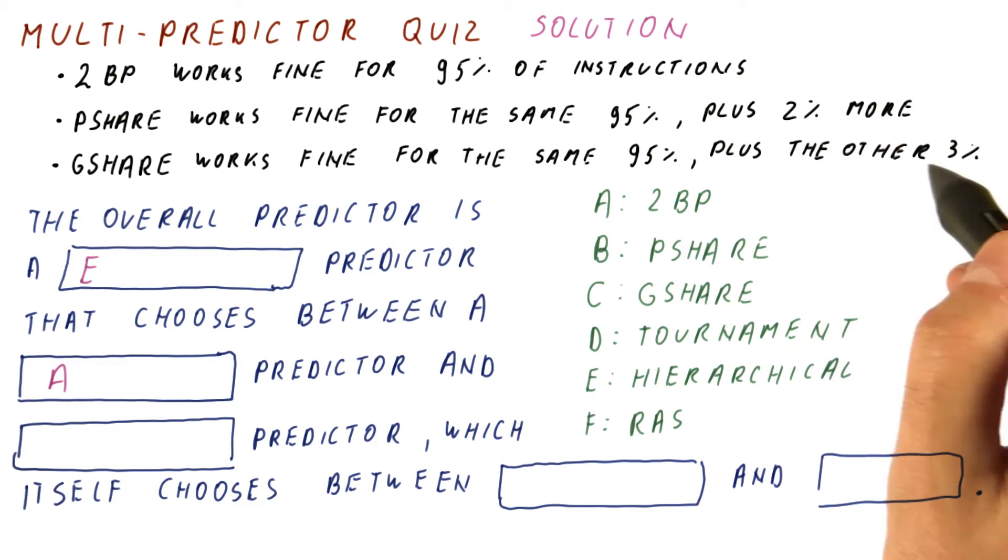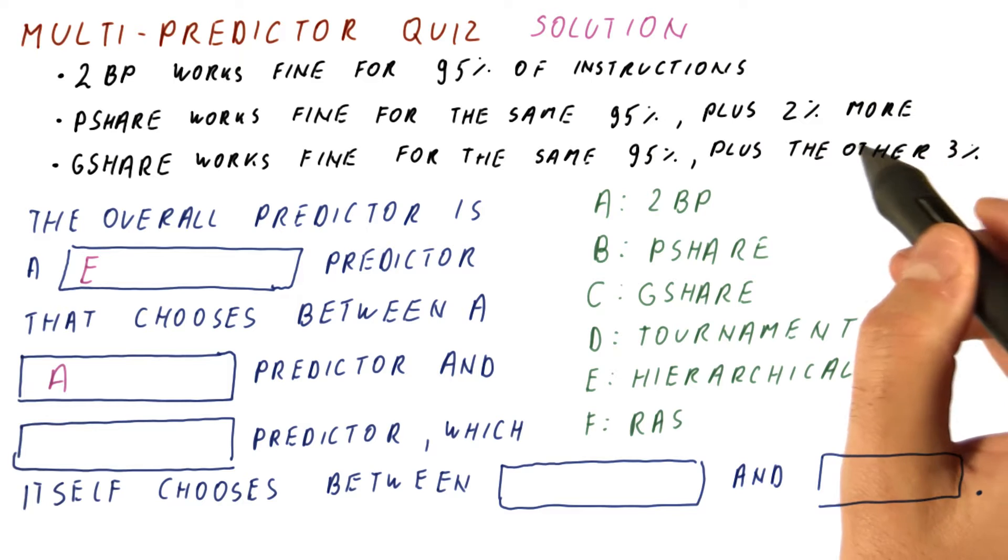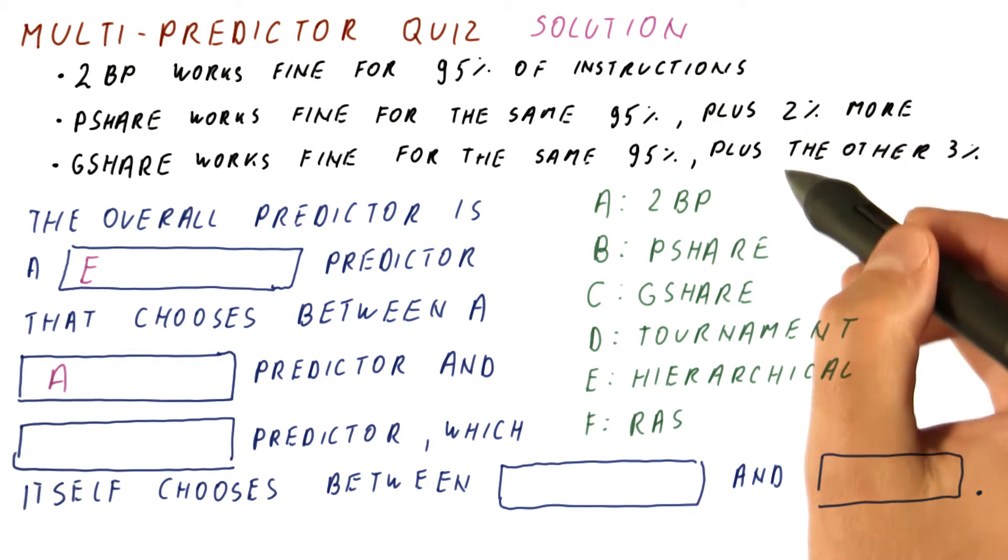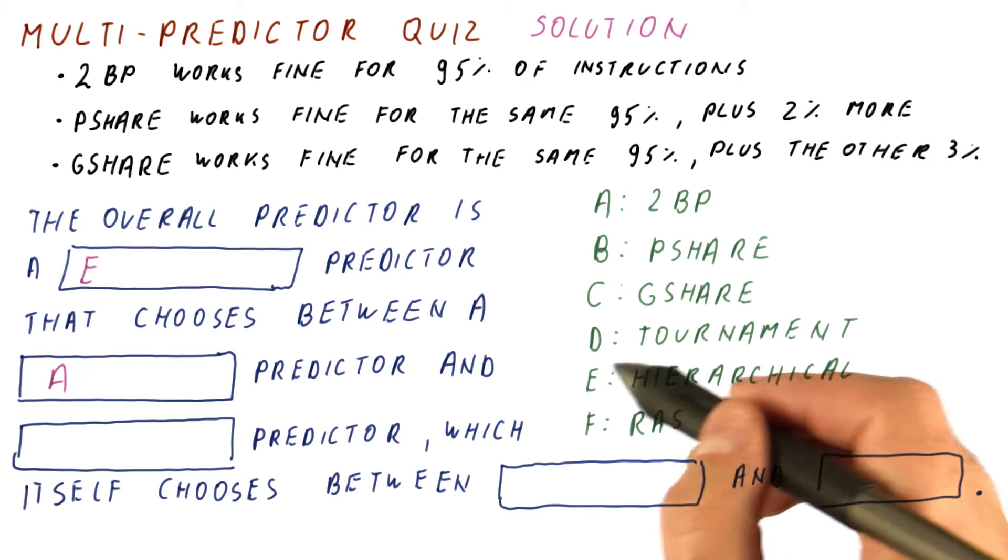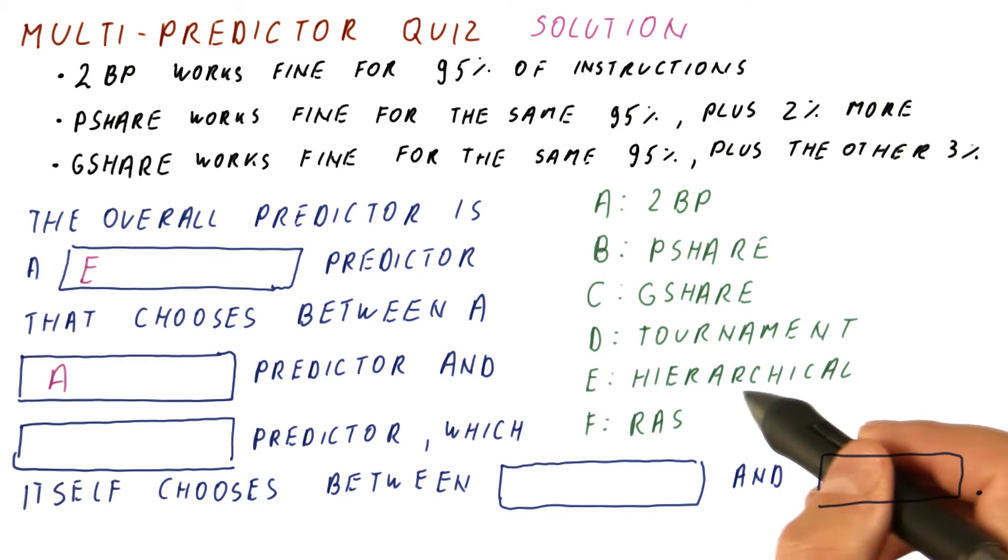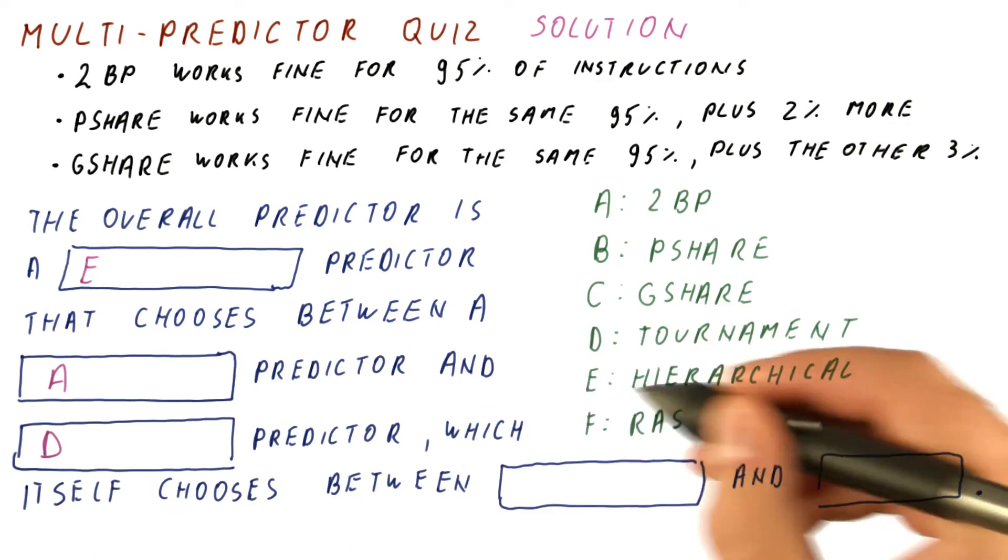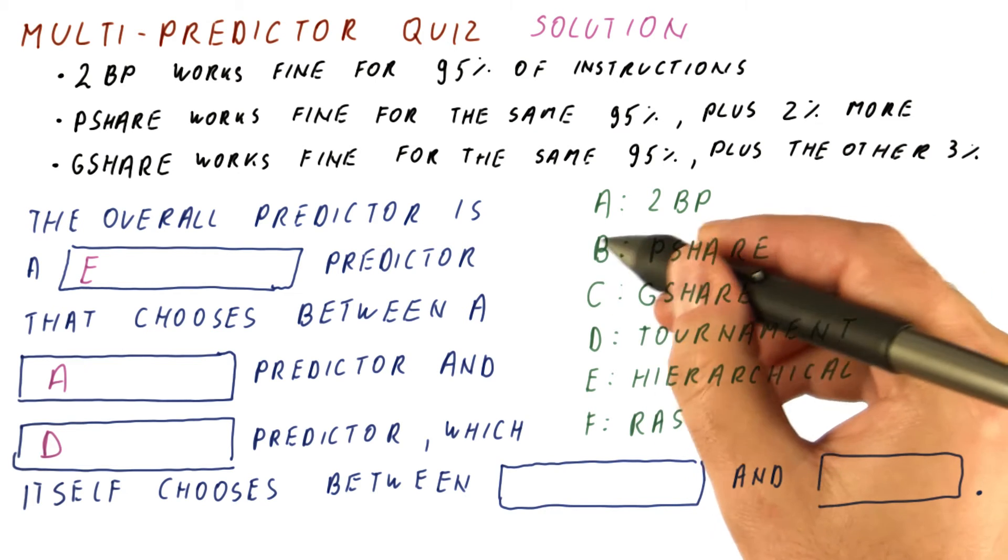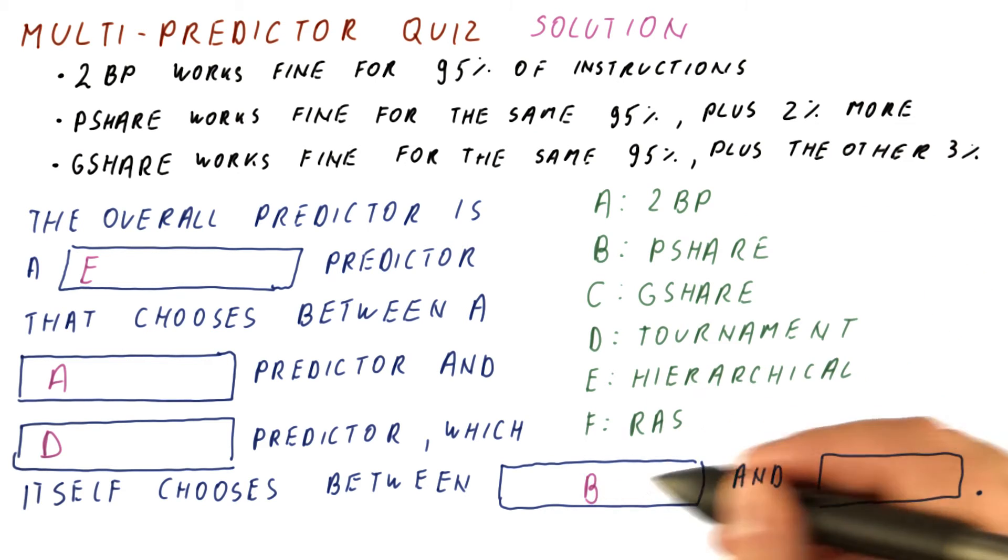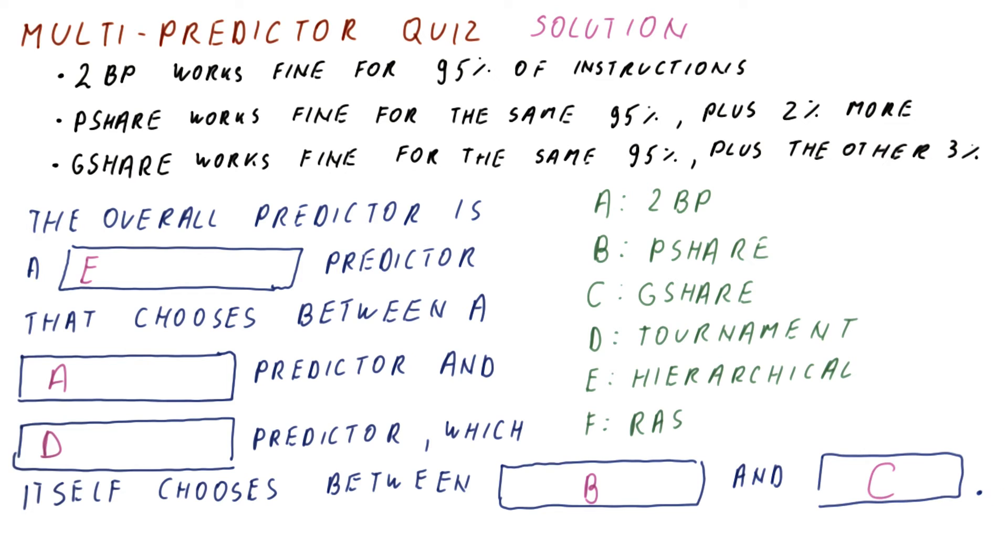Because P-share and G-share have different strengths, and neither of them is clearly superior to the other, we are not going to combine them using a hierarchical predictor. We are going to combine them using a tournament predictor that will choose between P-share and G-share.